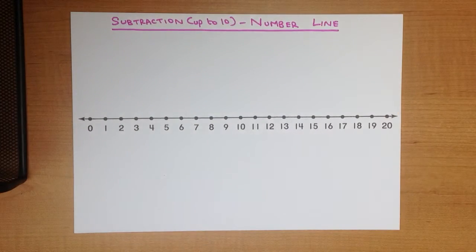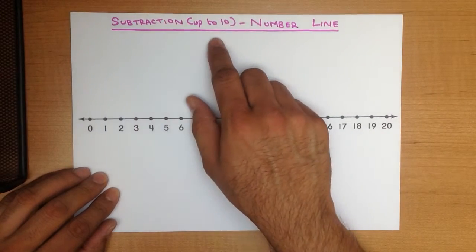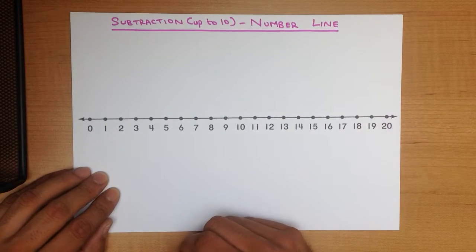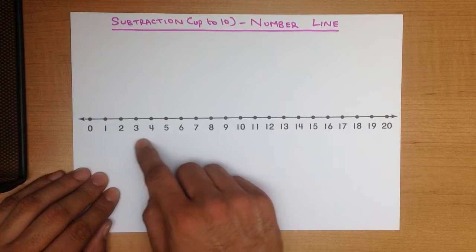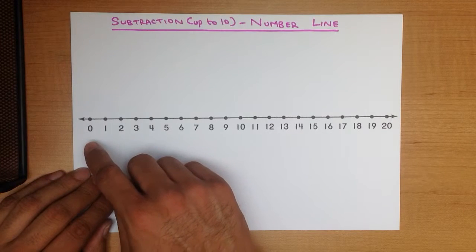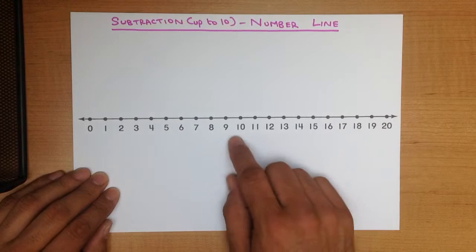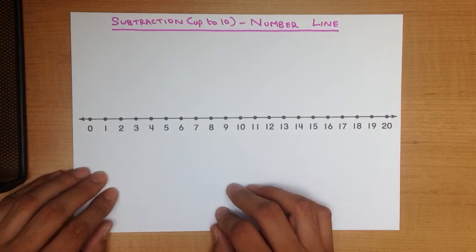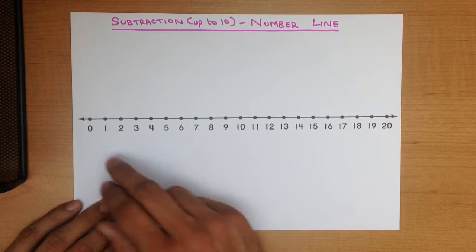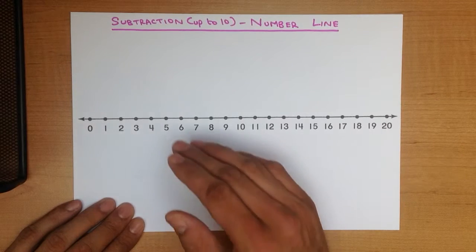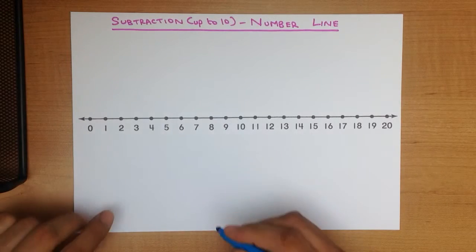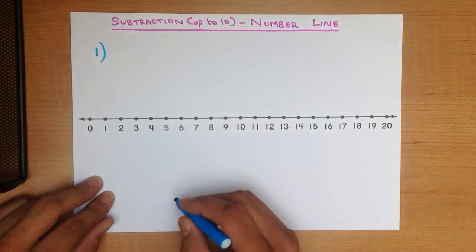In this tutorial we are going to go through subtraction of numbers up to 10 using the number line. If you have never seen a number line before, this is what it looks like — it's a straight line with numbers underneath. I've done mine from 0 up to 20, but it can go up to 10, up to anything, and can even include negative numbers. I've printed this off but you can very easily just draw a straight line with numbers underneath yourself.